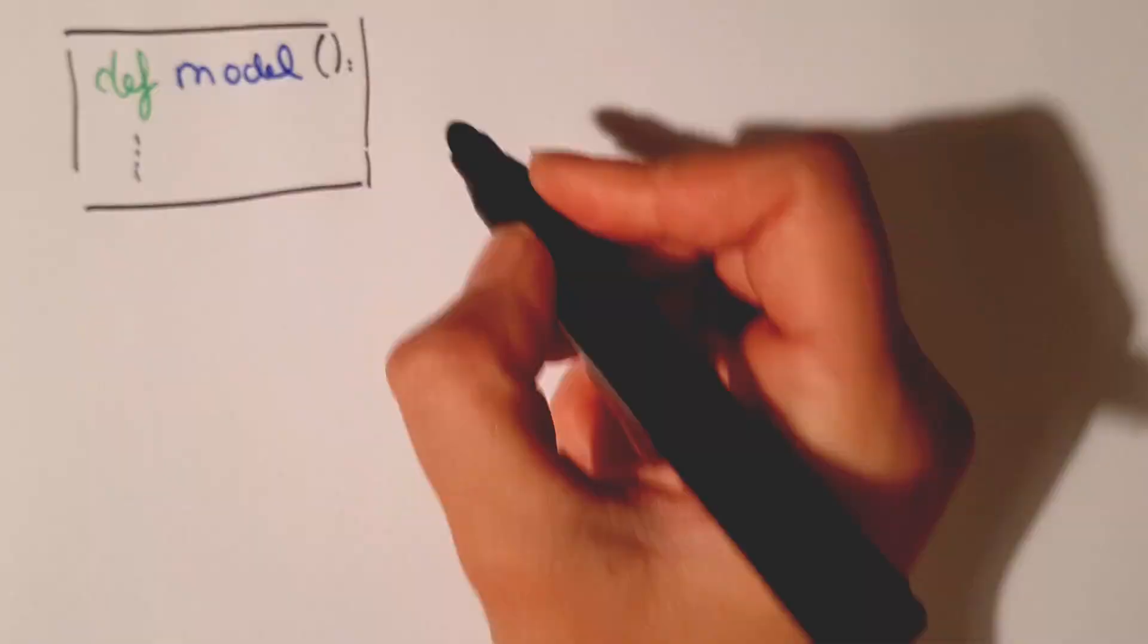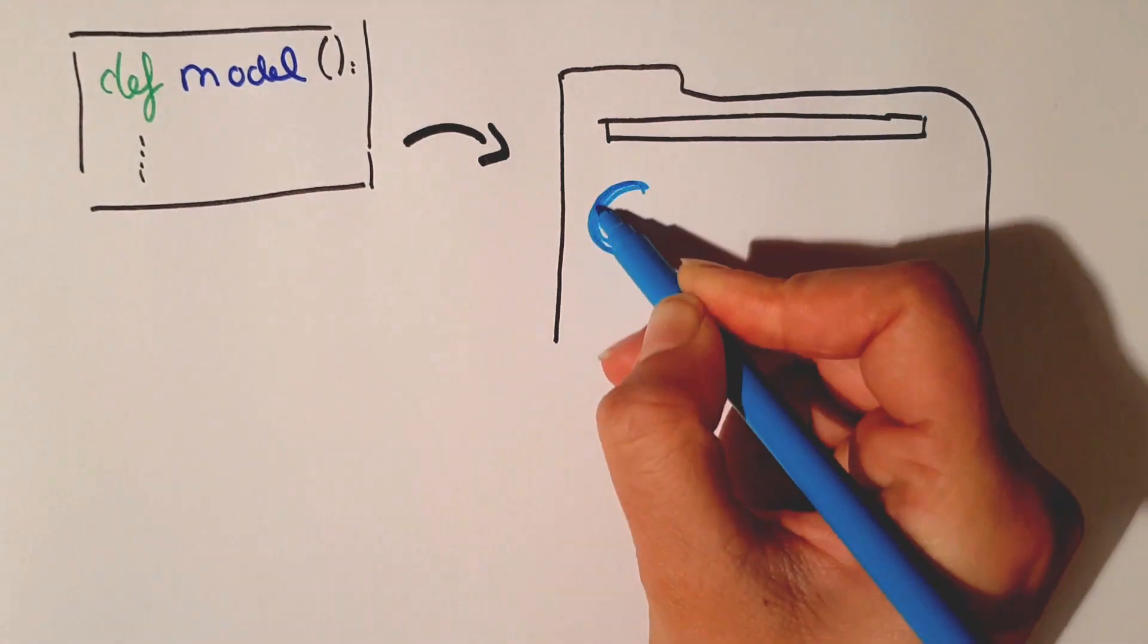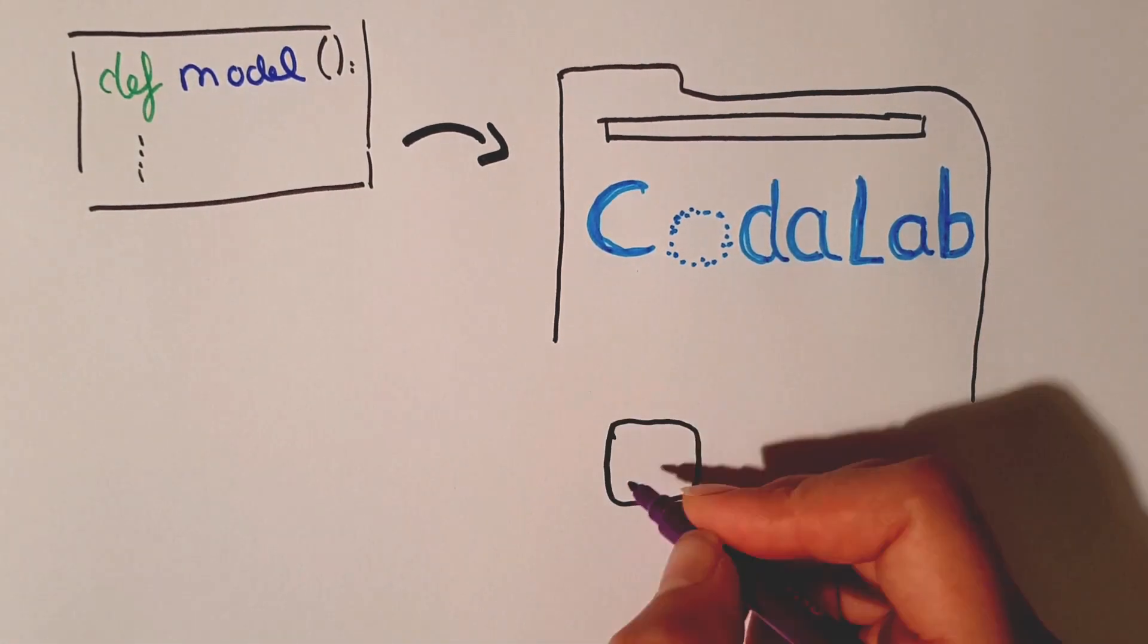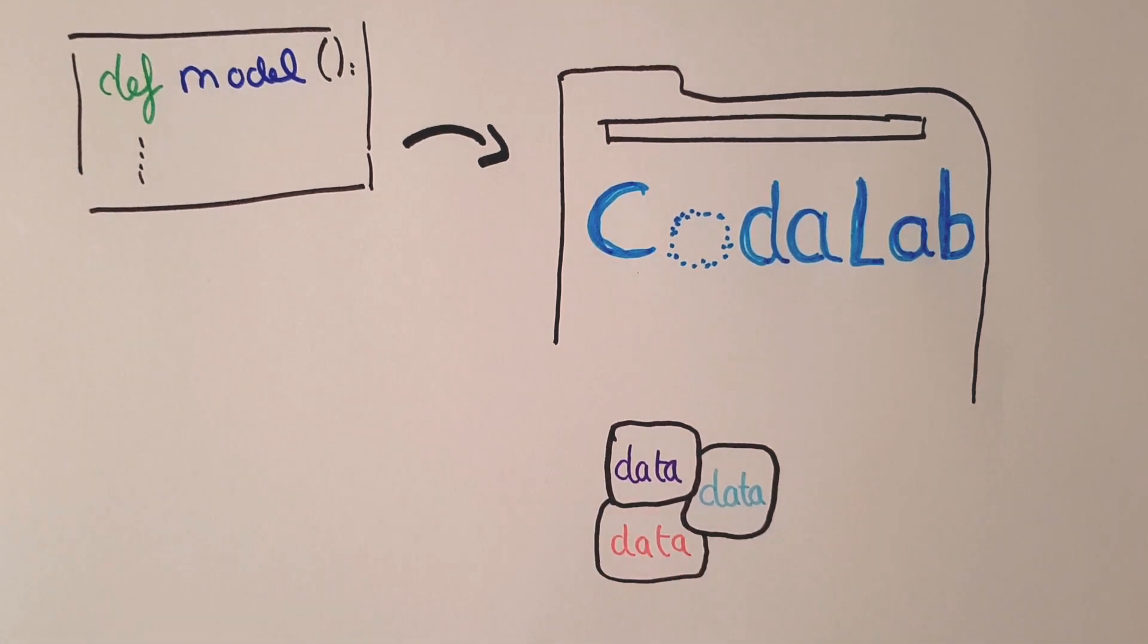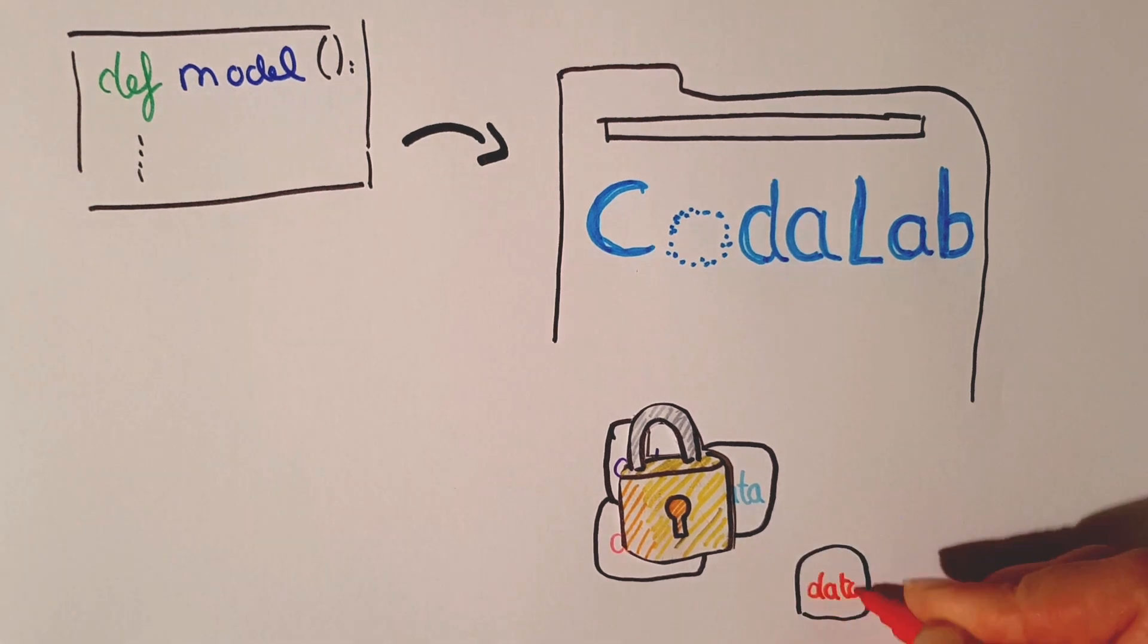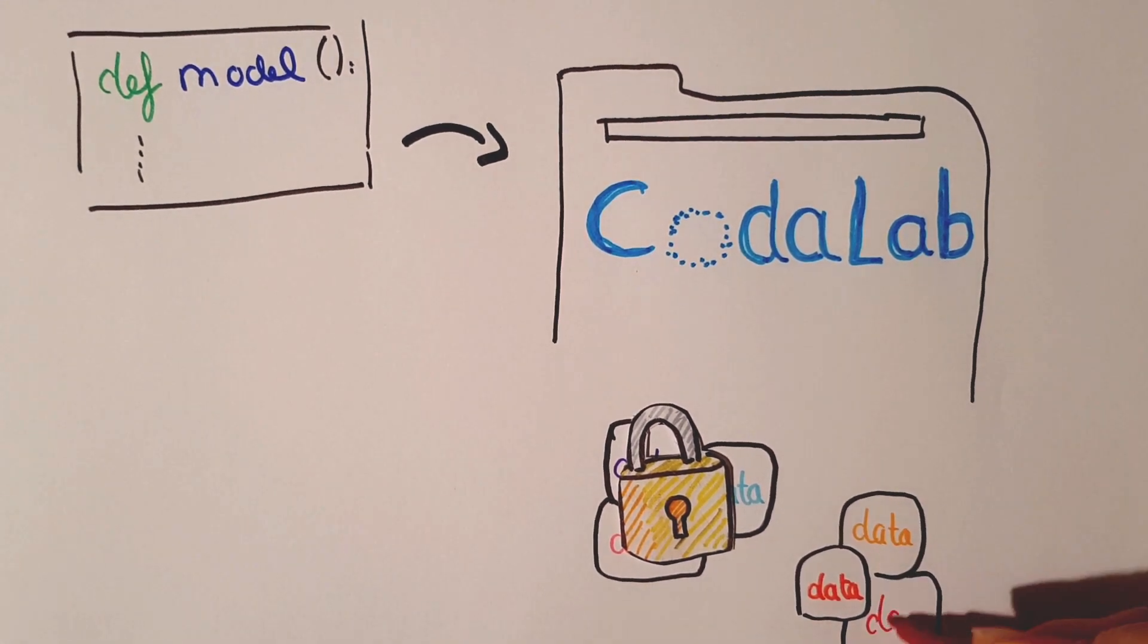Your entries, code submissions, are evaluated on the CODALAB platform automatically without having the datasets revealed. You get immediate feedback on the leaderboard. Ultimately, entries will be blind tested on fresh data.